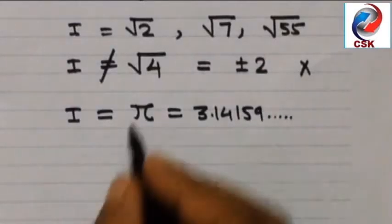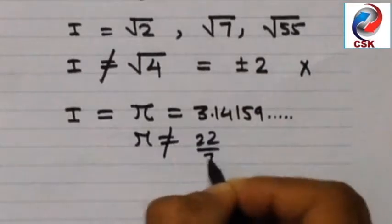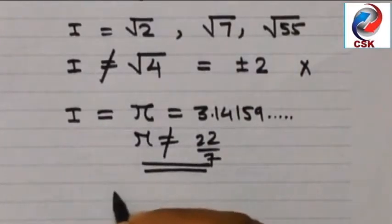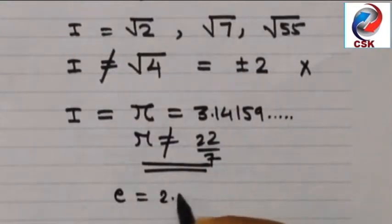So this doesn't have any certain value. This cannot be written in the form of a by b. Remember pi cannot be equal to 22 by 7 exactly. So pi is an irrational number.